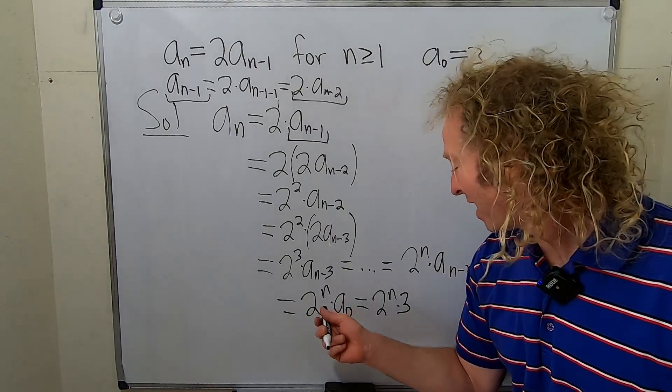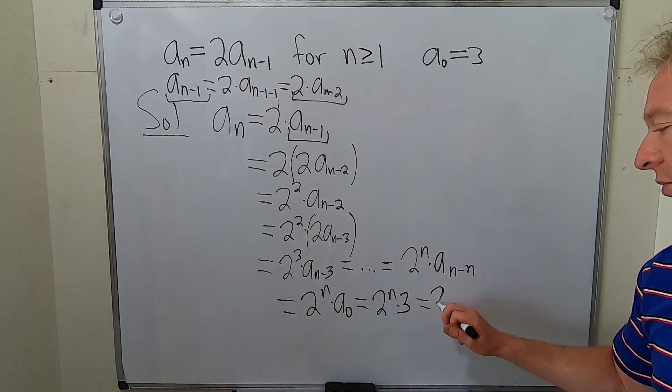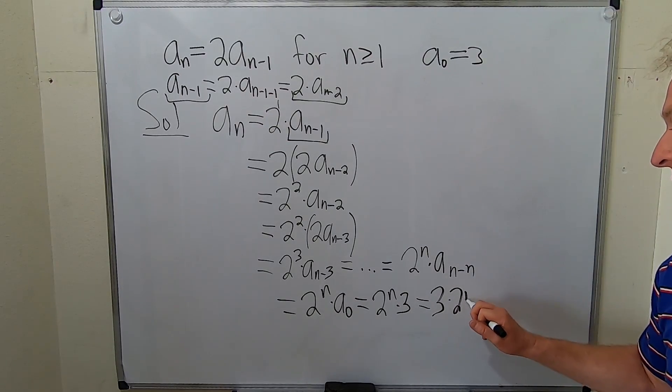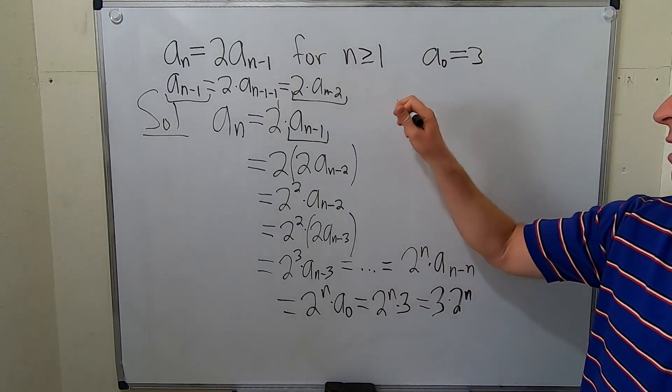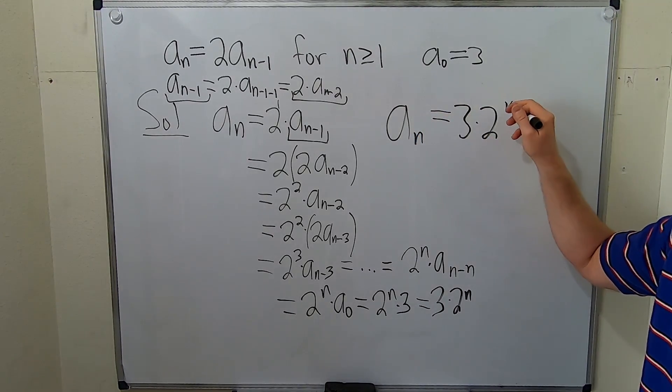Notice you can put the 3 in the front. It's just good form. So 3 times 2^n. And it's even better form if you write your answer: a_n is equal to 3 times 2^n.